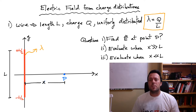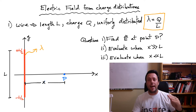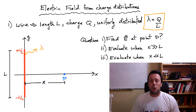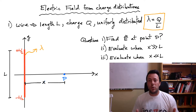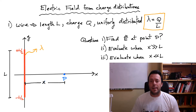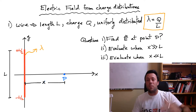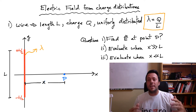Let's get started. I have a wire here that has a length L, and it has a total charge Q, and its charge is uniformly distributed over the length. So let's see how to solve this problem.